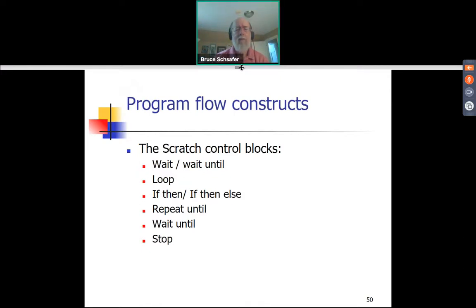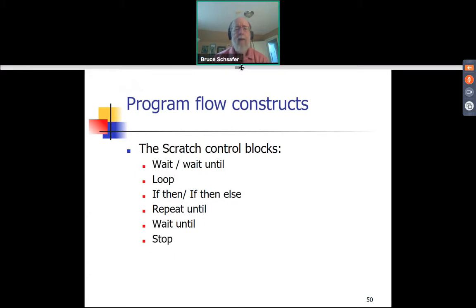We touched on a couple of these in the previous sessions, but we'll be digging deeper today. The wait block allows you to say the program should wait until something happens. If the robot is already in motion because you turned the motor on, telling the program to wait will not stop the motors. Looping is typically done either with a repeat block or a forever block. Decisions in Scratch are done with if-thens or if-then-elses. We'll also touch briefly on the stop block, which affects loops, particularly when you choose the forever option.